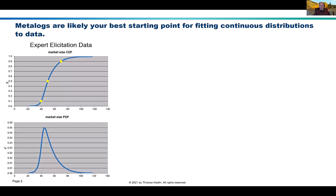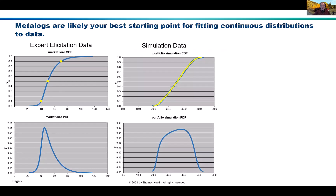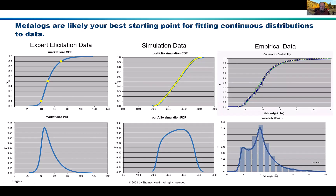Metalogs are likely your best starting point for fitting a continuous distribution to data. What kind of data? It could be expert elicited data where you've assessed from an expert 10th, 50th, and 90th quantiles, and you want a smooth curve to go exactly through those quantiles — metalogs are perfect for this. It could be simulated data; you're probably best off starting with a metalog for a continuous representation of discrete simulation output. The third category is empirical data, where you often want a metalog rather than classical distributions because it's more flexible and frankly easier to fit.